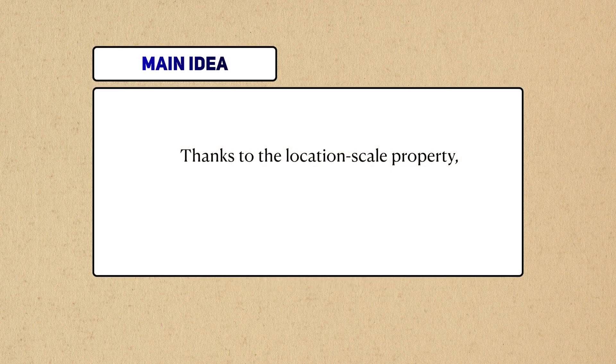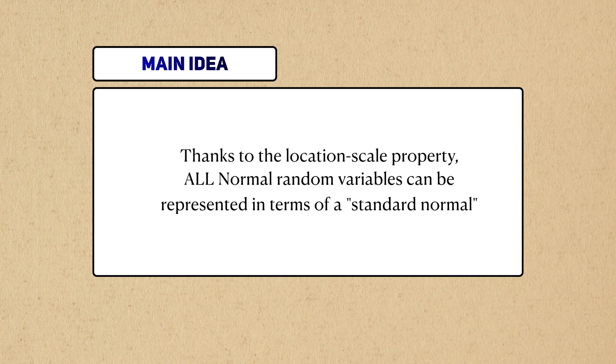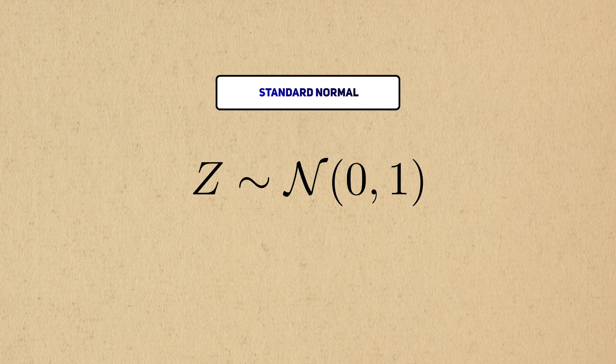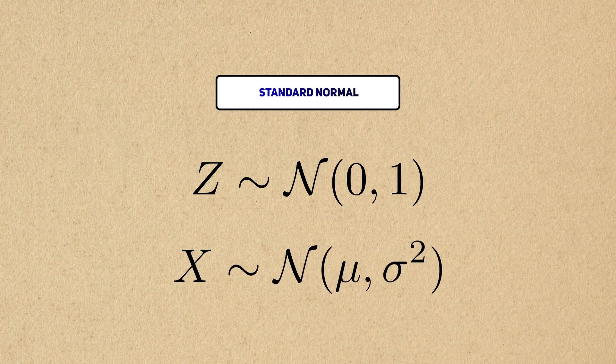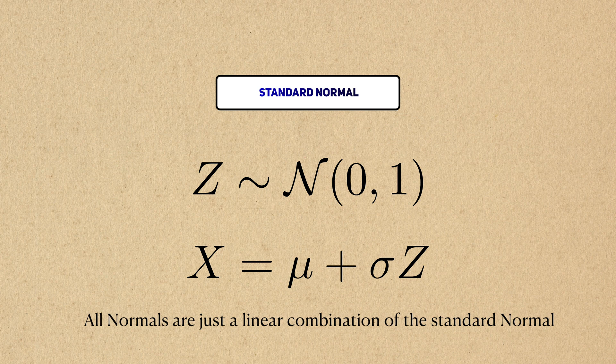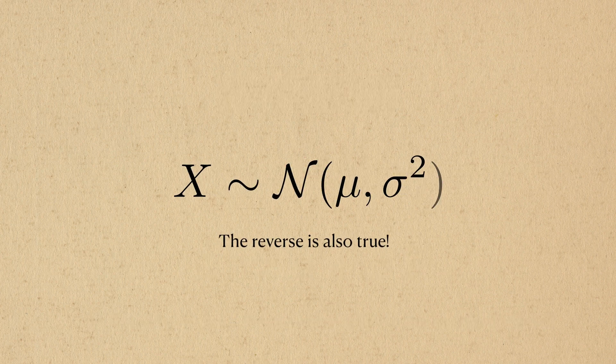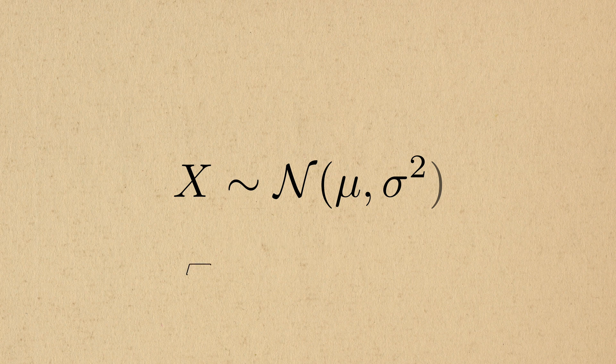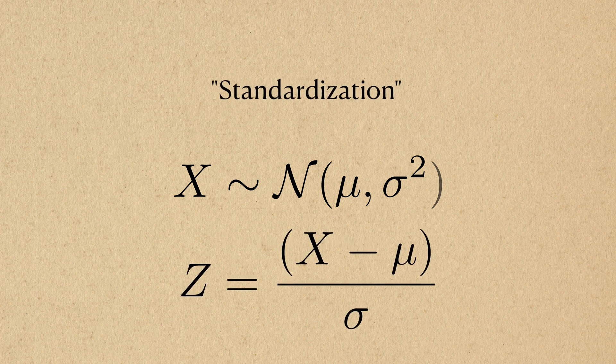The location scale property is important because it lets us represent all normal random variables in terms of a so-called standard normal variable, which has zero mean and unit variance. For reasons unknown to me, we usually denote a standard normal as z. To get back to any arbitrary normal, we just need to set a equal to its mean and b equal to its standard deviation. Conversely, we can convert any normal random variable back into a standard one by doing the reverse process. This is called standardization.